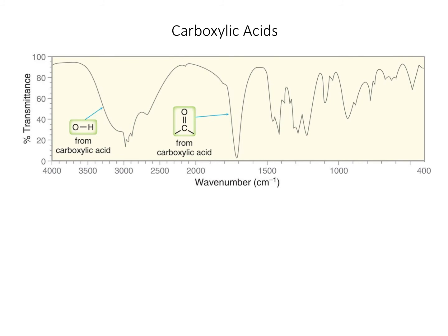Carboxylic acids have both a carbon-oxygen double bond — so we'd expect to see that around 1,700 wavenumbers — and an OH stretch. That OH stretch gives the broad, hairy peak centered around 3,000 wavenumbers that looks kind of like a Gandalf beard. When you see that really broad peak around 3,000 wavenumbers, that's the OH from a carboxylic acid.